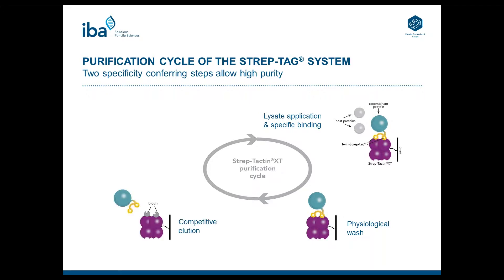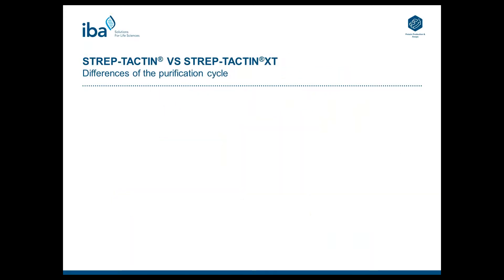Then the second specificity-conferring step follows — it is a competitive elution using biotin for Streptactin XT. This allows the concentrated elution of the target protein in a sharp peak. Finally, the resin is regenerated by addition of low-concentrated sodium hydroxide. Then the resin can be reused at least 3 to 5 times, but most people use it 10 to 20 times or even more.